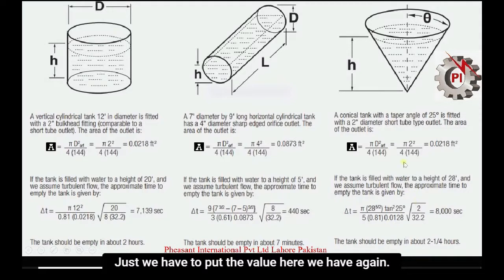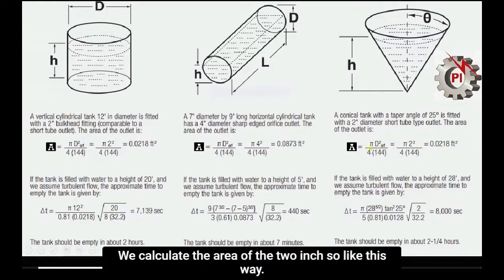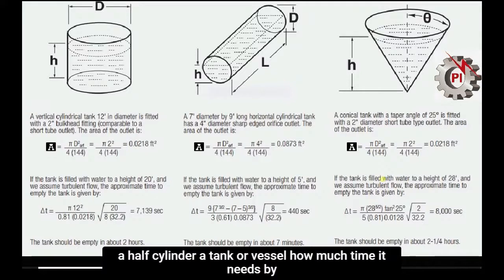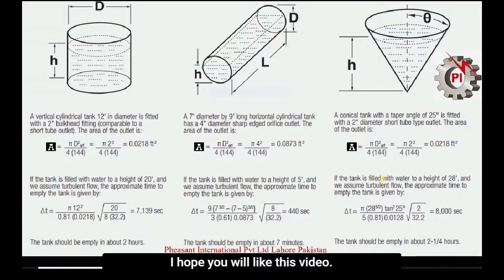Similarly, for the conical tank, the orifice diameter is 2 inches. We calculate its area and substitute into the conical tank formula. This is how we determine how much time it takes to empty a cylinder, tank, or vessel by gravity. I hope you liked this video — thank you very much.